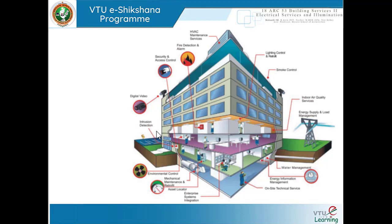Reading from the slide in a clockwise direction: digital video, CCTV camera, security and access control, fire detection and alarm system, HVAC maintenance services, lighting control and retrofit, smoke control, indoor air quality services, water management systems, energy information management, on-site technical service, enterprise systems integration, asset locator, mechanical maintenance and retrofit, environmental control, and intrusion detection. Swimming pools and spas, discussed earlier, are not captured in this image but belong to the three ELV categories.